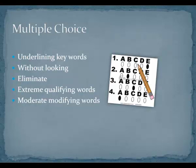Sherlock Holmes said, "Whenever you eliminate the impossible, whatever remains, however improbable, must be the truth." That's a good strategy for taking multiple choice tests. Here are some other techniques: First, read each question carefully, underlining key words — this will help you clarify the question. Second, try answering the question without looking at any of the options; if one of the options matches your answer, it is likely the correct answer. Third, eliminate the options that are obviously wrong — it will increase the odds of you answering the question correctly.